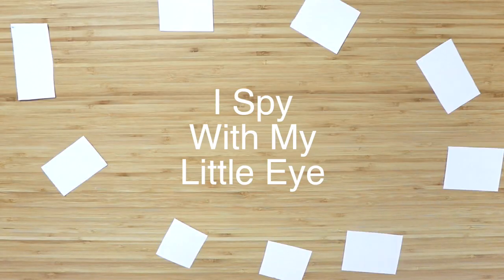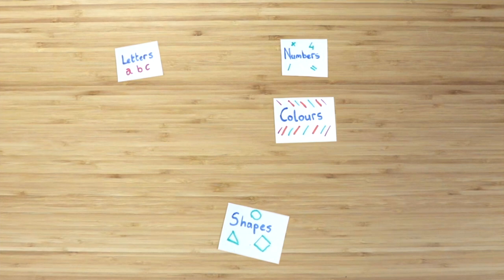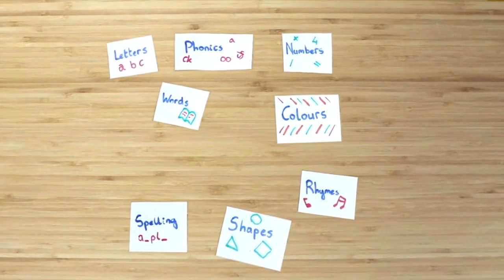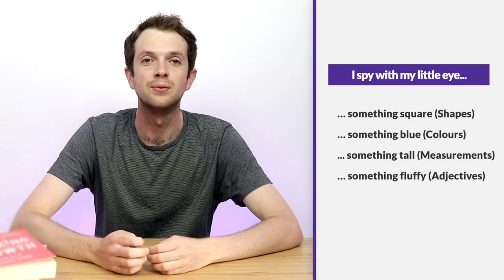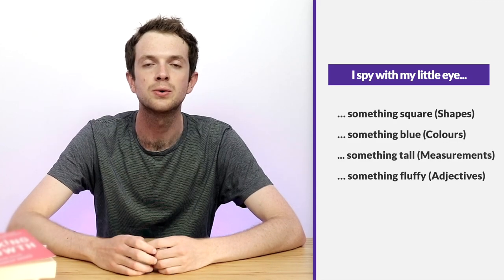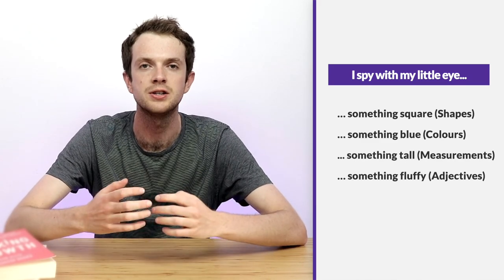Number three is I Spy with my little eye. For this activity you won't need any specific items, but we're suggesting ten different variations of the game that can help children build specific vocabulary around different areas. The ten different options are colours, shapes, numbers, letters, words, spelling, rhymes, phonics, adjectives and measurements. We suggest that while playing these different versions of I Spy, you encourage the children to ask questions to each other rather than just guessing one word at a time, as this will help build more discussion around the topic.